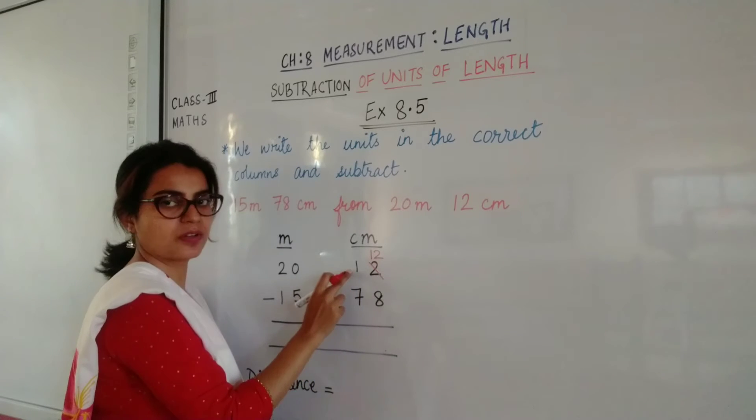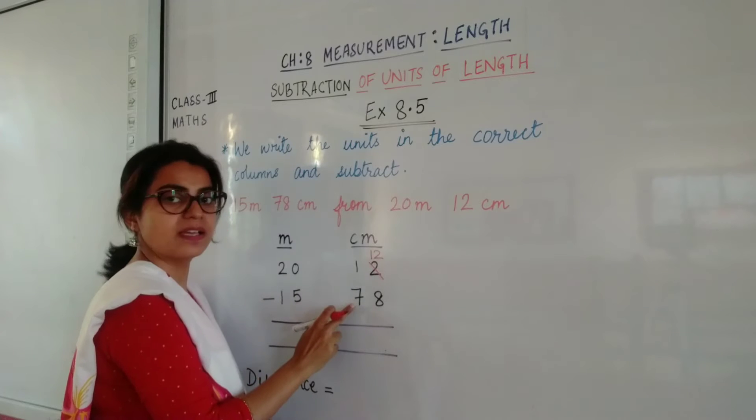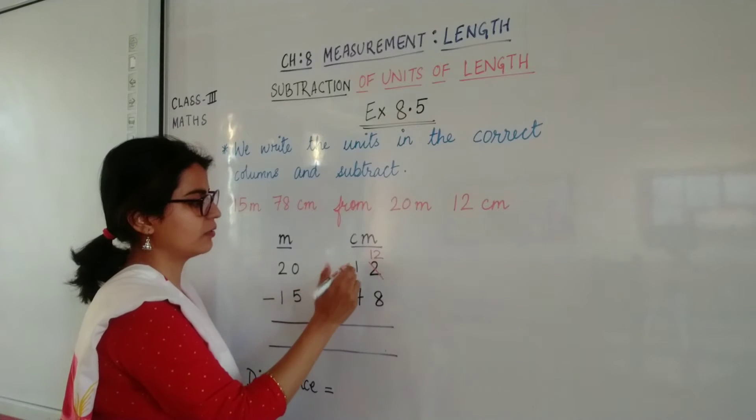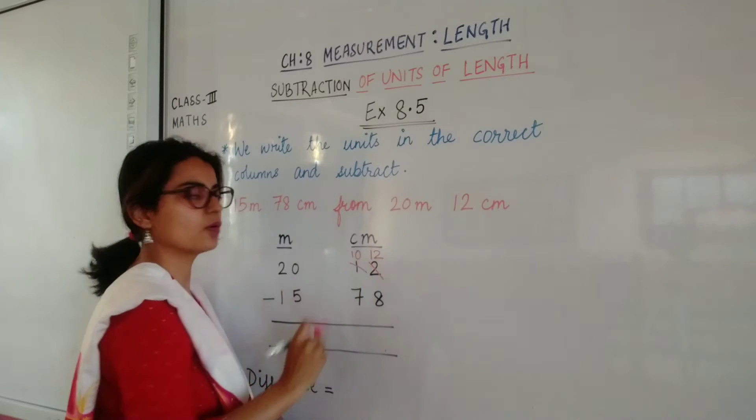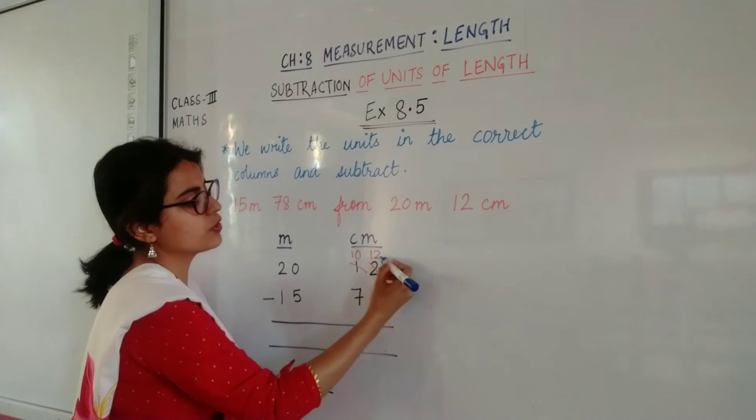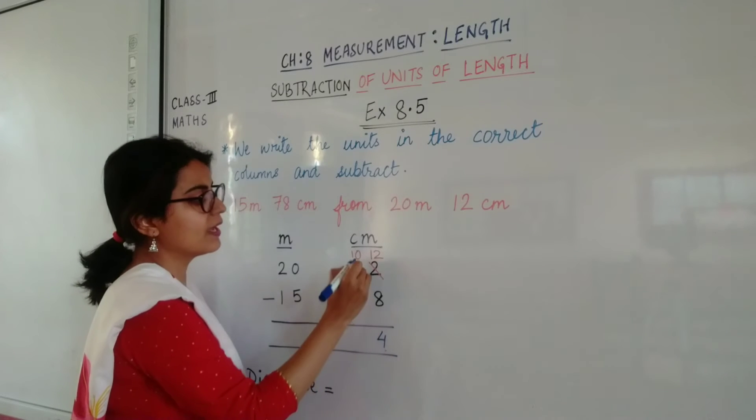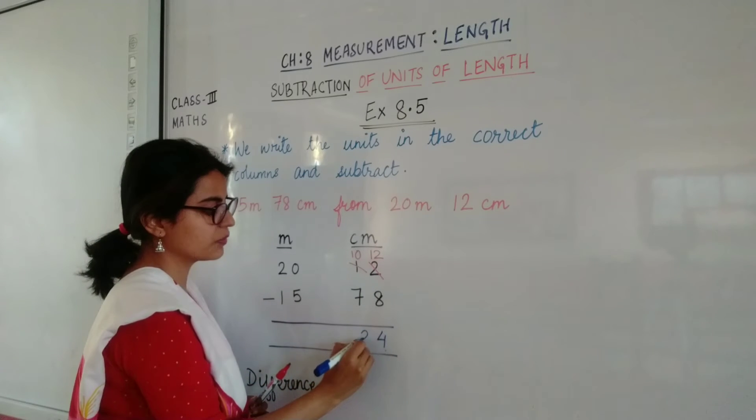11 hota kyunki 7 isse bada hai ye borrow karta, but isne isko ek tens de diya to yeh khud 10 ho gya. Okay, now 12 minus 8 is 4, 10 minus 7 is 3.